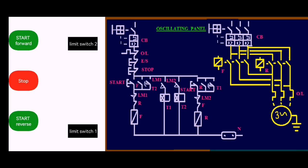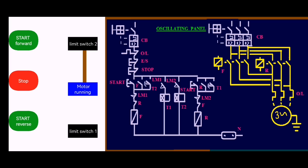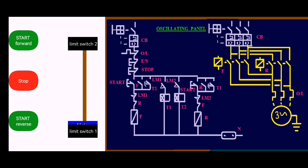When Timer 2 finishes counting, the motor goes down again. This is how the oscillating panel works — it will continue going up and down like this, after finishing each count, until you press the stop button to stop it.